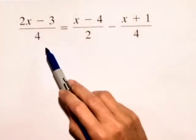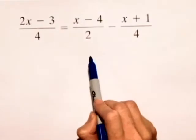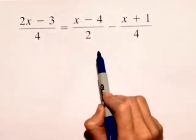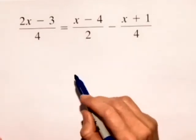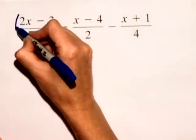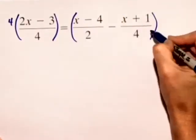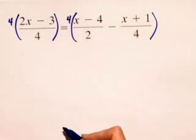So by looking at the denominators of 4, 2, and 4, we find the smallest number that is divisible by 2 and 4, and that number is 4. So that tells us to multiply both sides of this equation by 4, and that will clear the fractions.